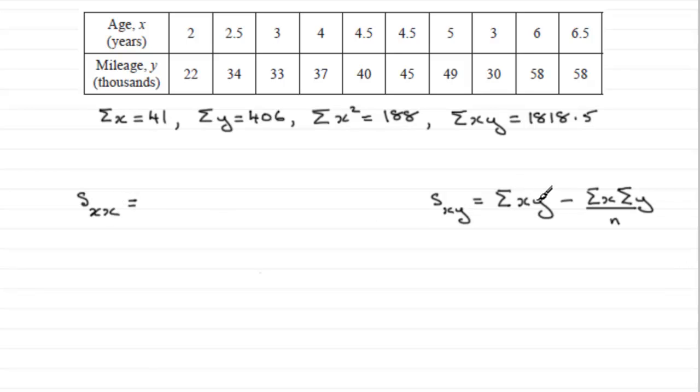all you've got to do is replace any Y over here with an X. So you're going to get sigma XX or sigma X squared, then minus sigma X times another sigma X, which is sigma X all squared, and that's divided by N.